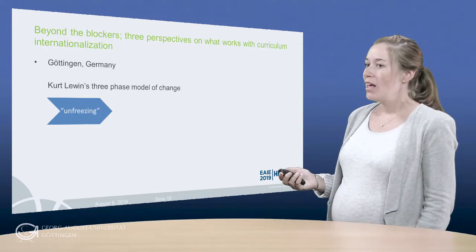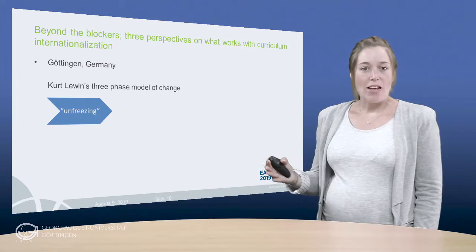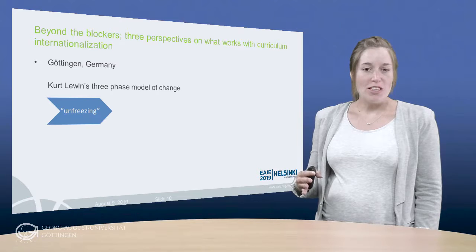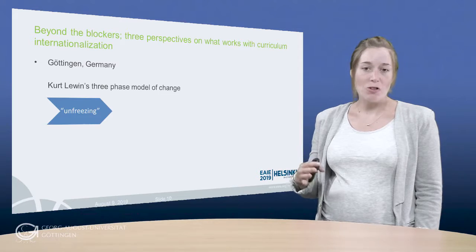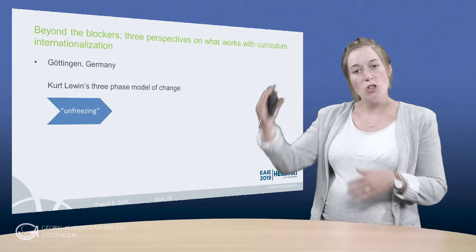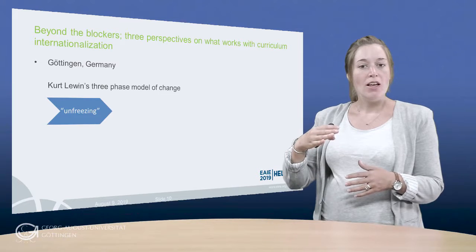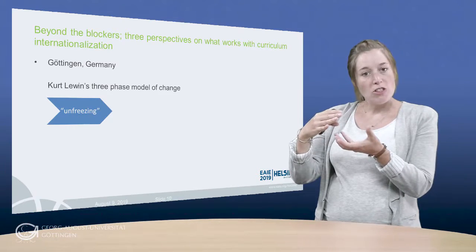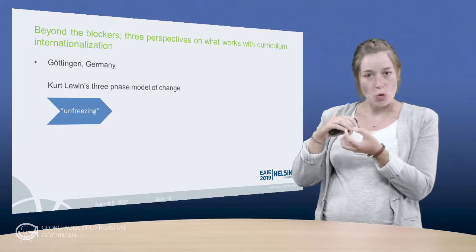Bringing bottom-up and top-down processes together in such approaches is, from our experiences, vital to move beyond the obvious blockers. Our approach in Göttingen is based on Kurt Lewin's three-phase model of change. Let's look at the slide. What is quite important, and what differs from Lewin's initial stages, is that although our IOC project has been initiated top-down by the central level, it eventually turns to bottom-up initiatives and impulses, and it is a joint process.